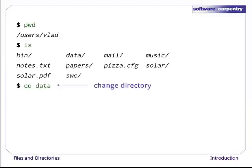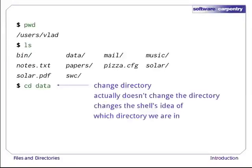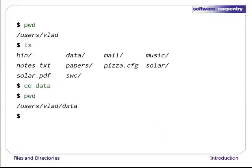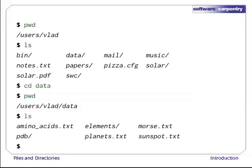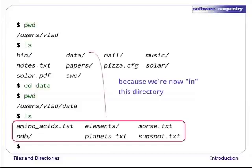cd stands for change directory, which is a bit misleading. The command doesn't change the directory; it changes the shell's idea of what directory we are in. cd doesn't print anything, but if we run pwd after it, we can see that we are now in /users/vlad/data. If we run ls without arguments now, it lists the contents of /users/vlad/data, because that's where we are now.